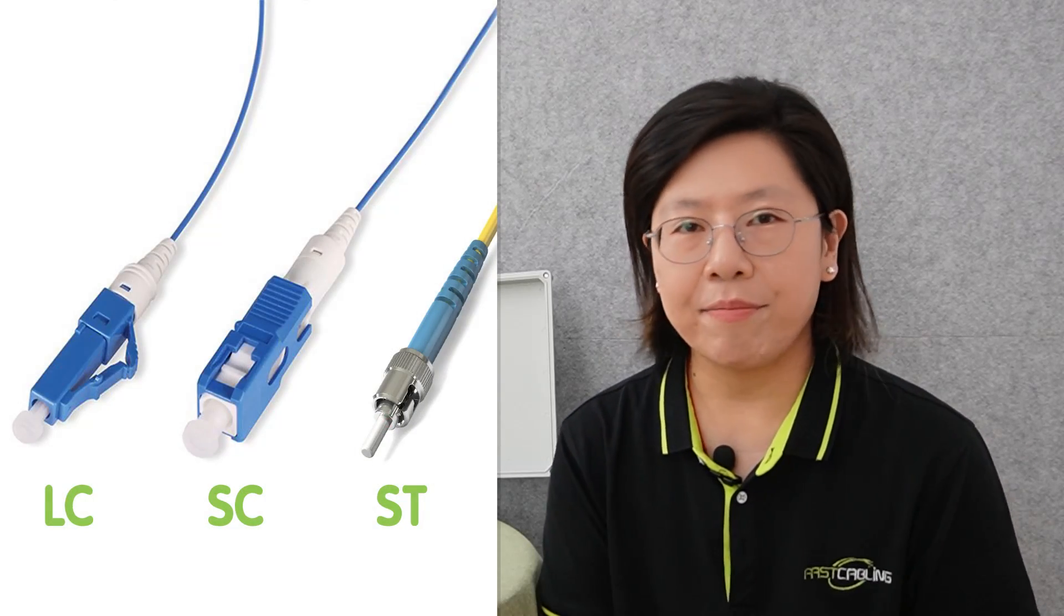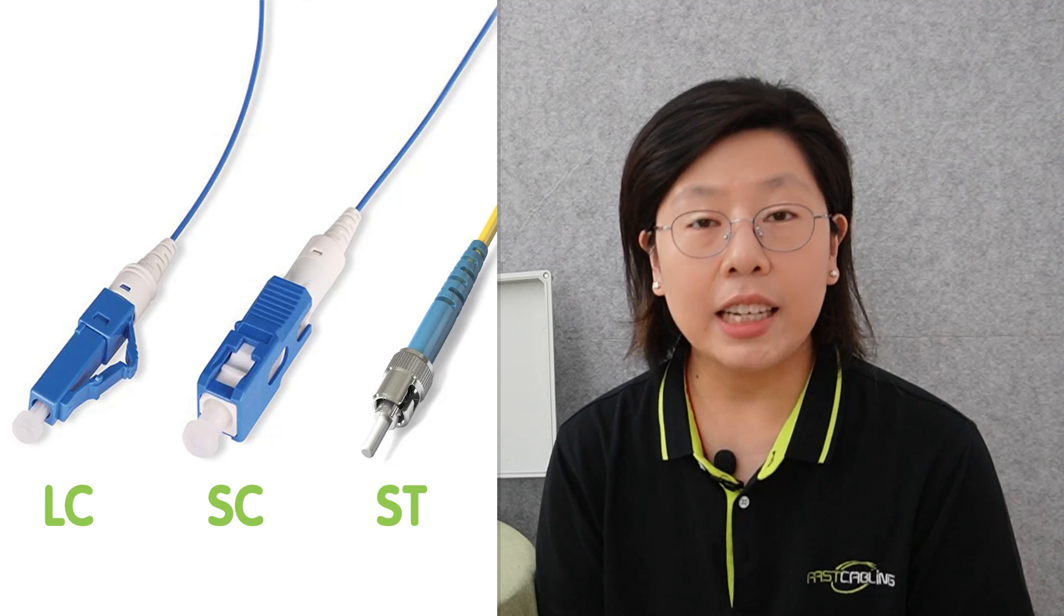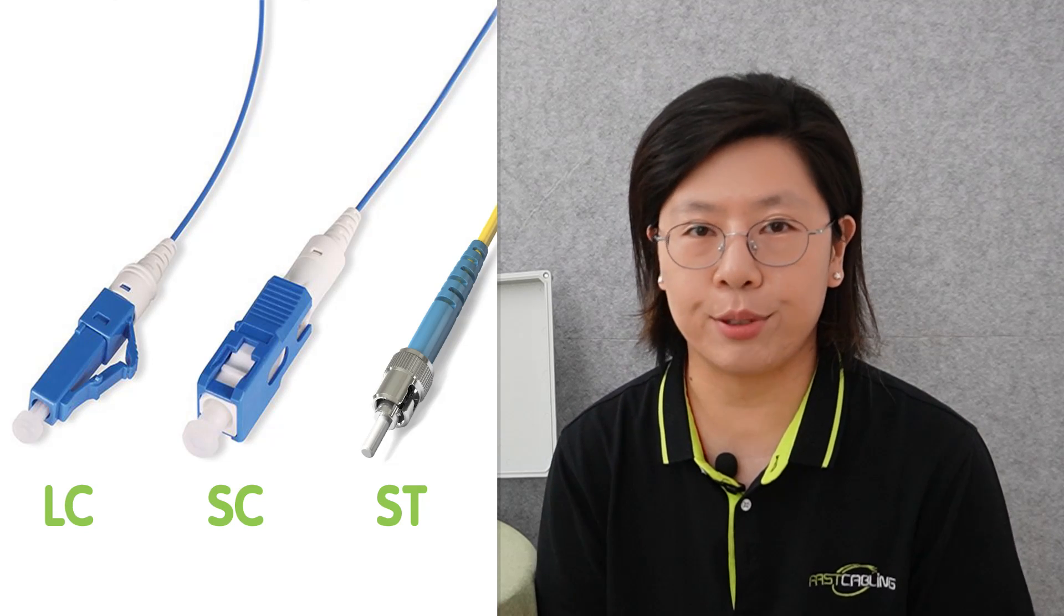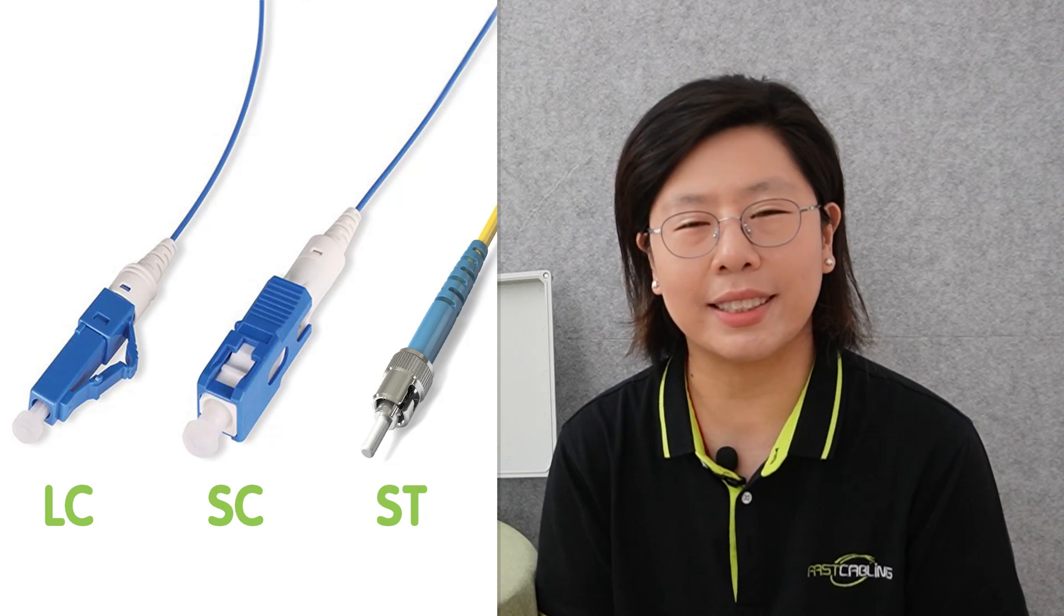Pay attention to connectors as they ensure a secure and reliable connection. Common outdoor connectors include LC, SC, and ST, each with its advantages in terms of ease of use and performance. For outdoor use, opt for cables with robust jackets designed to withstand harsh weather conditions. Outdoor rated fiber optic cables often feature protective layers that guard against moisture penetration and resist damage from exposure to sunlight and temperature extremes.